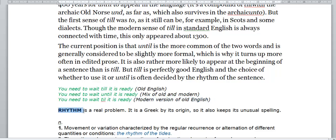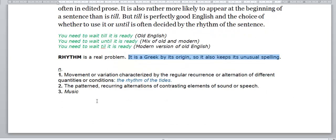Rhythm is a real problem. It is a Greek word by its origin, so it also keeps an unusual spelling. It is a noun that means the movement or variation characterized by the regular recurrence or alternation of different quantities or conditions. For example, the rhythm of the tides. The tides is when the water goes up and down in the sea.